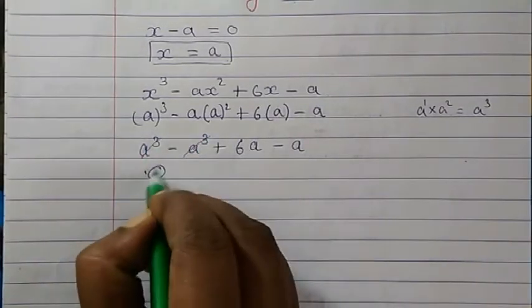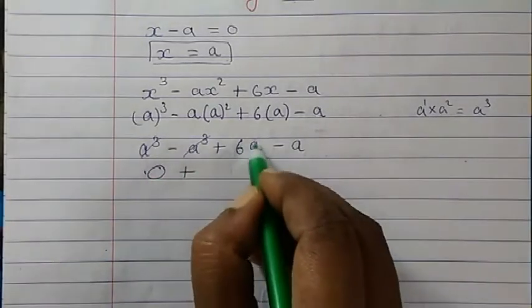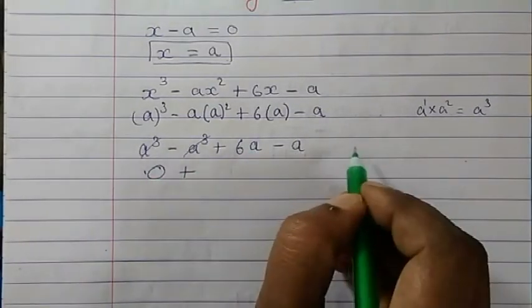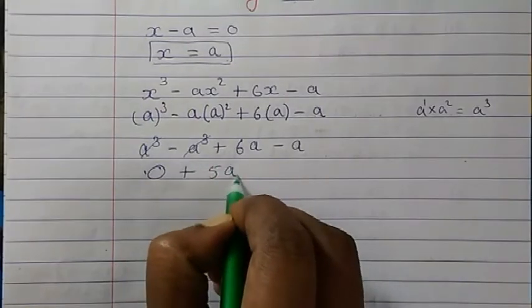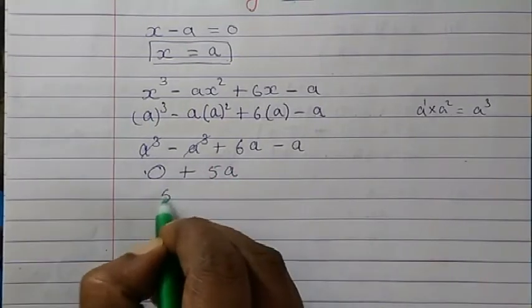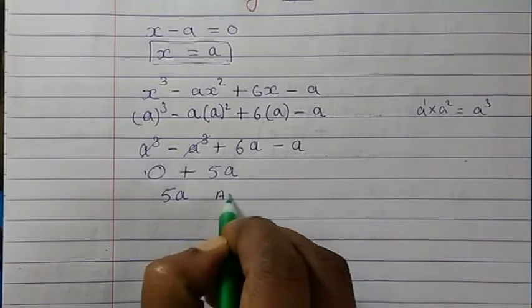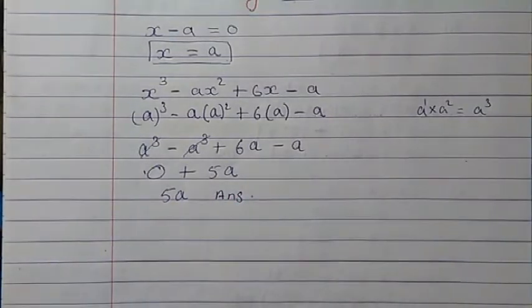So now this is a³ - a³, so we will get 0 here. Plus from 6a, 1a is minus, so we will get 5a. So finally we will get 5a as our answer. That's it. Thank you and God bless you.